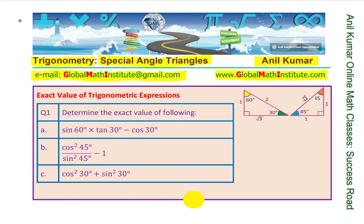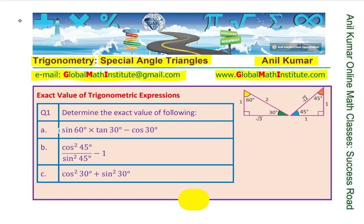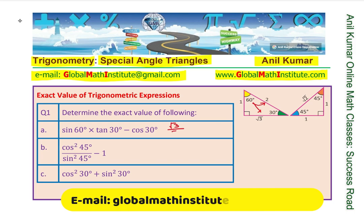I also provide the special triangles here so that initially it is a good practice to remember them. Once you see them a couple of times, you will get an idea of what the values could be. Here is your 30-60-90 triangle whose sides are 1, square root 3, and 2; and then we have the 45-45-90 triangle whose sides are 1, 1, and square root 2. Let's begin by writing the values for sin60 times tan30 minus cos30. Sin60 — looking from the 60-degree angle, the opposite side is square root 3 and the hypotenuse is 2.